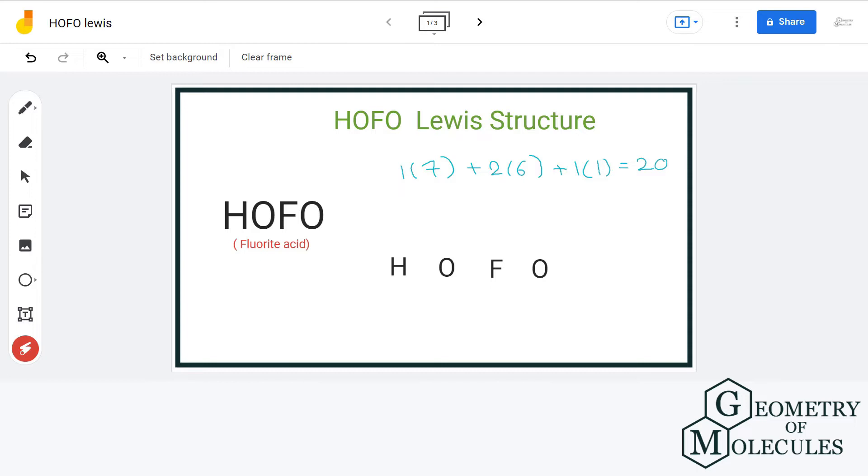For the arrangement of atoms, we will place the atoms as shown here: H adjacent to O adjacent to F adjacent to O. This molecule is an exception to the rule where we place the most electronegative element at the terminal part of the molecule.